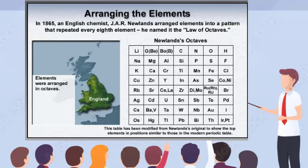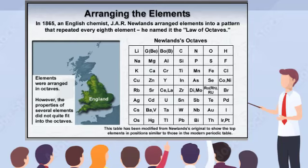More importantly, the physical properties of several elements did not quite fit his pattern of octaves. Newlands' table needed improvement, and this improvement came several years later with a new arrangement of the elements.